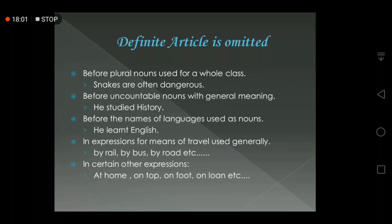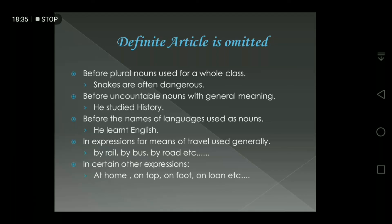In certain other expressions — like at home, on top, on loan — we also cannot use the definite article. For example: 'He stayed at home to receive the guest.' There is also a difference in meaning between using and not using the definite article. For example: 'He has gone to church' simply means he went for the usual purpose — like prayer or worship. But 'He has gone to the church' means he went there for some other purpose, possibly to do a job or talk to someone.